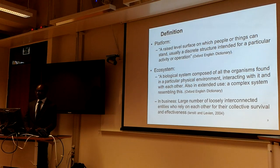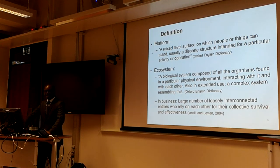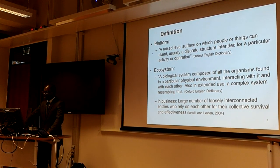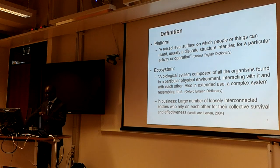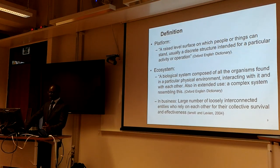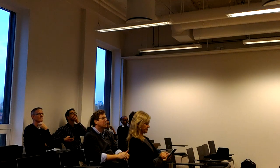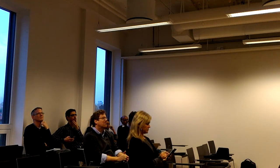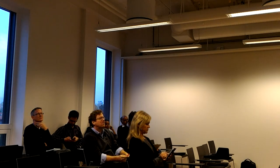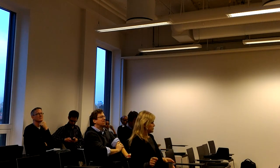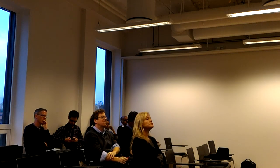What is a platform? The Oxford English Dictionary describes the platform as a raised level surface on which people or things can stand, usually a discrete structure intended for a particular activity or operation. Whereas an ecosystem is seen as a biological system composed of all the organisms found in a particular physical environment interacting with each other. In terms of business, an ecosystem is defined as a large number of loosely interconnected entities which rely on each other for their collective survival and effectiveness.